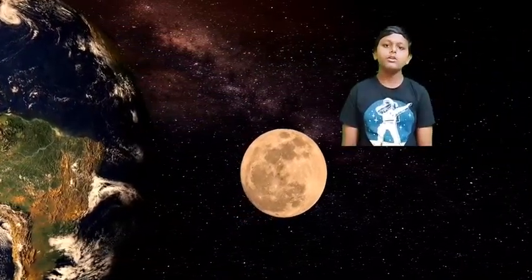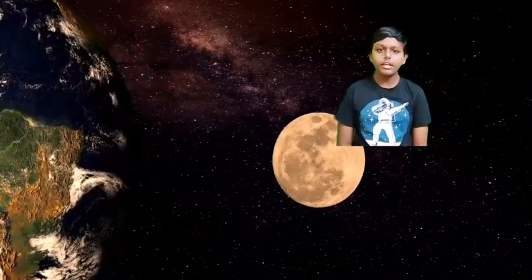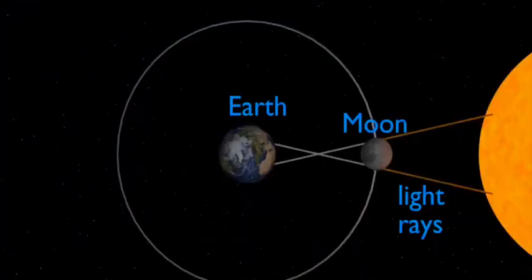Solar eclipse can only occur when the moon is close enough to the elliptical plane. Just imagine, if the elliptical plane was circular, we would have seen a solar eclipse once in every month. This is how a solar eclipse looks like.